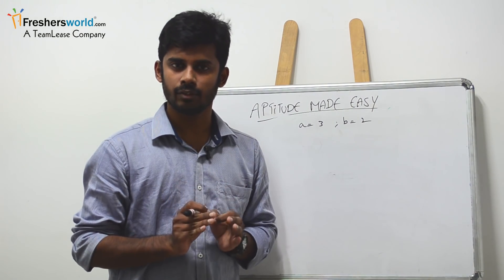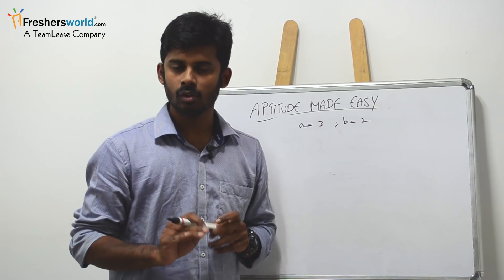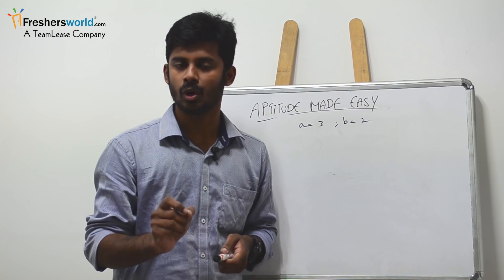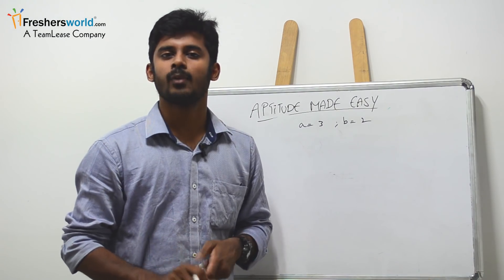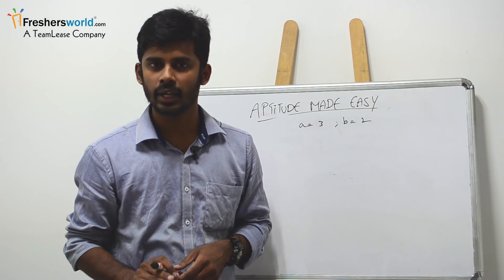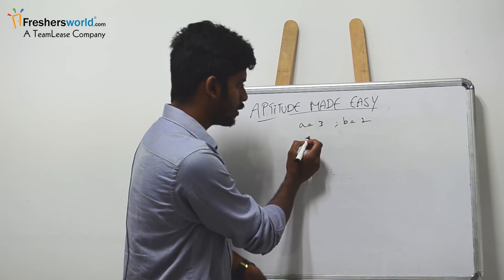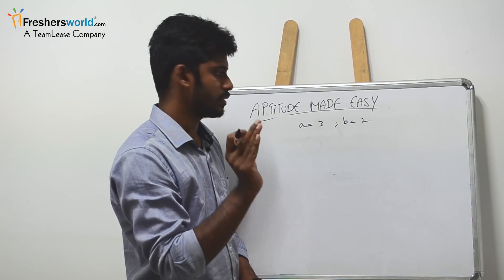If you're going for any interview, when you're going for a technical round, the most simplest and most frequently asked question in C language or coding round is swapping two numbers without using a third variable. Let's see how to do it. For example, a value is 3 and b value is 2.